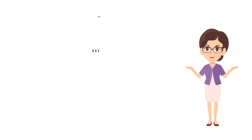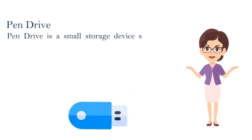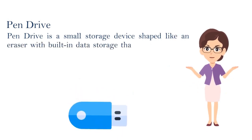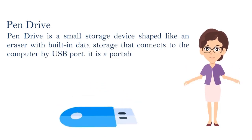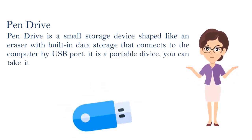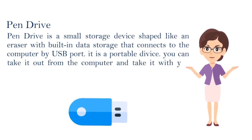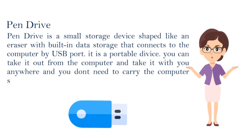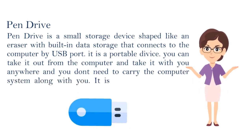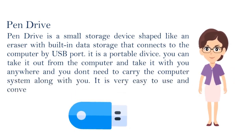Number six: Pen Drive. A pen drive is a small device shaped like an eraser with built-in data storage that connects to the computer through a USB port. It is a portable device. You can take it out from the computer and take it with you anywhere, and you don't need to carry the computer system along with you. It is very easy to use and convenient to take anywhere.